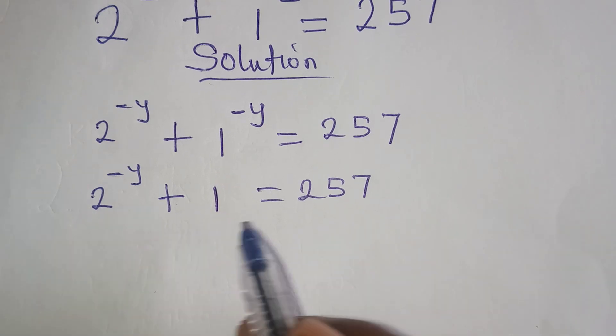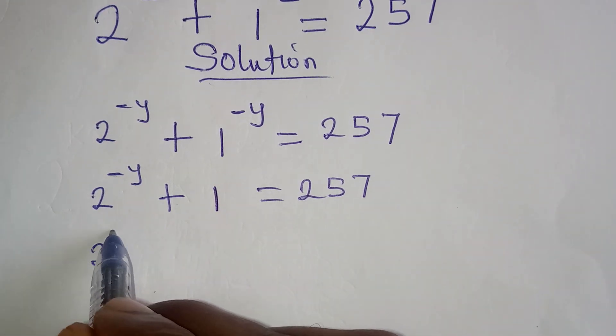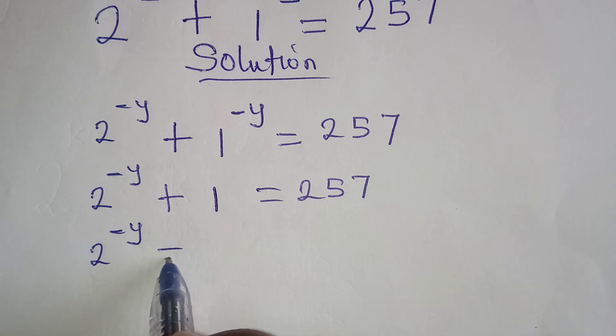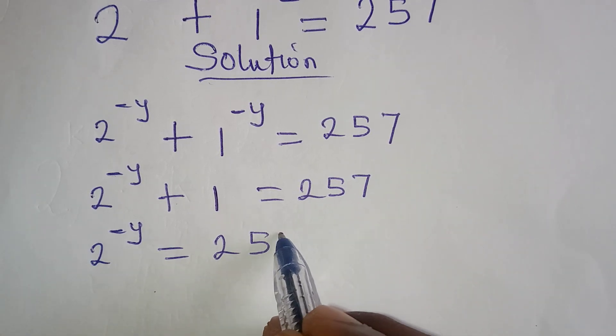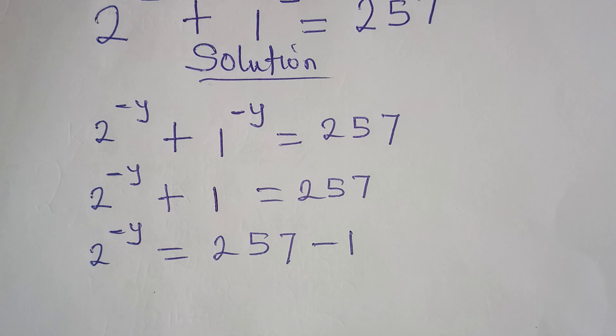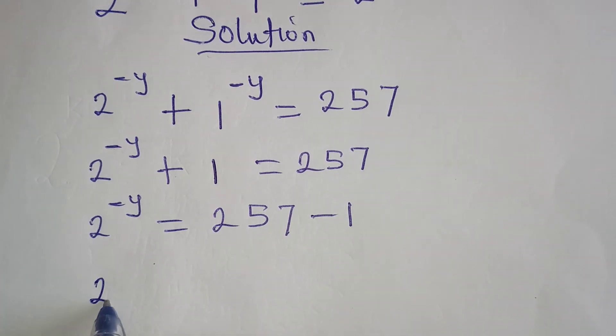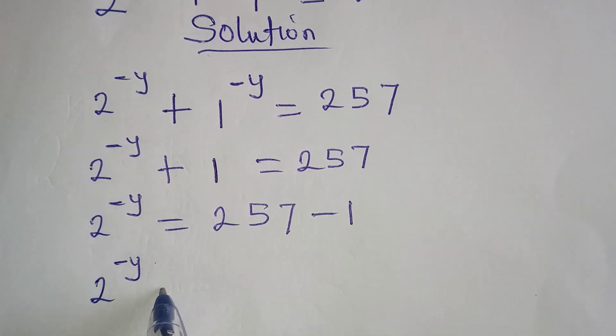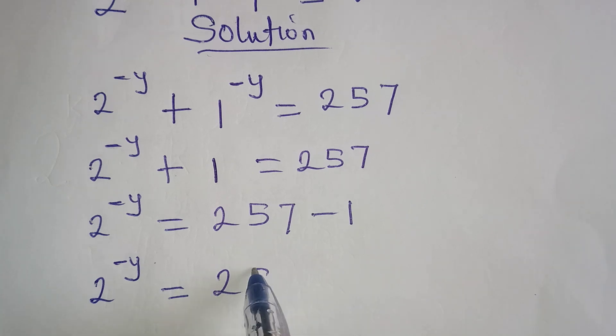Now I can collect like terms. So 2 to the power of negative y is equal to 257 minus 1. And then 2 to the power of negative y is equal to 256.